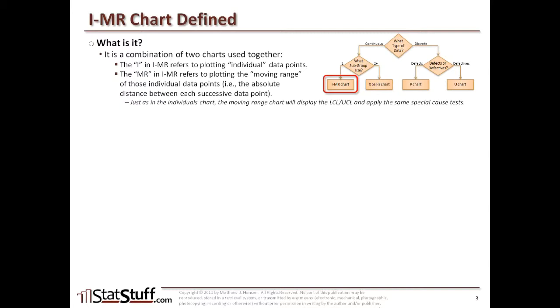So just as in the individual's chart, the moving range is going to display for us the lower control limit and upper control limits and apply the same types of special cause tests for us. So here's an example of how Minitab will calculate the moving range for us. So here we might have the actual raw data point in the left-hand column where we might have a 2, 5, 3, and so on. So what it does is it takes the distance between the 2 and the 5 and that difference is 3. Then it takes the 5 and the 3 and the distance of that is 2. Then 3 and 1 and the distance of that is 2 and so on. For all of these, just to calculate for us the absolute difference between each of these data points in succession.